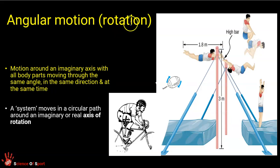Our second type of motion is angular motion or rotary motion or rotation. This involves part of a body or a whole body or an object rotating around an imaginary or a real axis. While that rotation is happening, the parts of that object are moving at the same angle, at the same direction, at the same time. The gymnast's whole body rotates around the bar, which is acting as the axis. Those body parts go around in the same direction, at the same angle, at the same time.